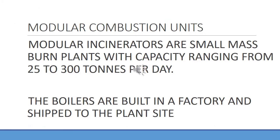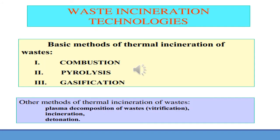The next type is modular combustion units. These are very small burn plants with a capacity of about 300 tons per day. They are prefabricated or ready-made combustion units which are prepared at one location and moved to the required site.